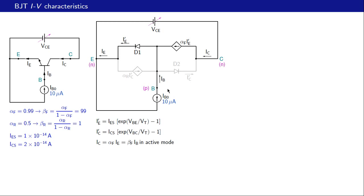We need an equation in terms of VB. That equation comes from IB equal to ten microamps: IB equals IE-prime plus IC-prime minus alpha-F times IE-prime minus alpha-R times IC-prime. Since VBE equals VB minus zero and VBC equals VB minus VC, both IE-prime and IC-prime can be written as functions of VB. This yields a nonlinear equation with exponential terms, so we must use an iterative method to solve for VB.